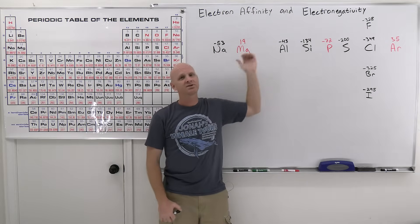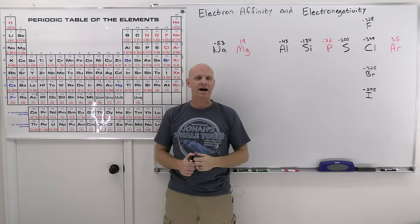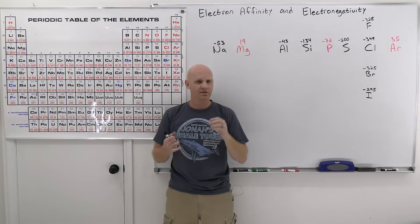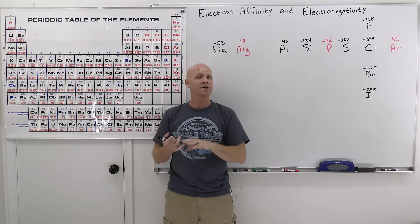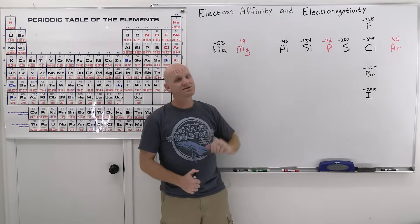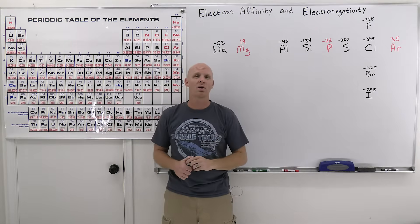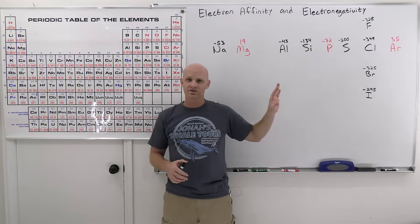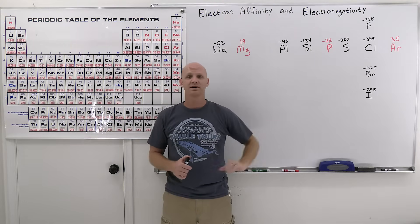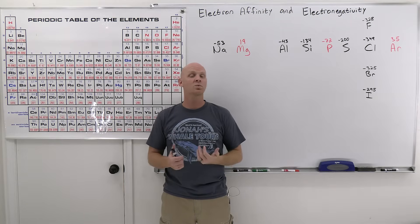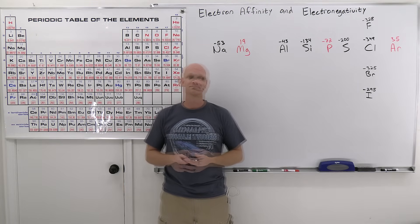Electron affinity and electronegativity are the last of the periodic trends we'll cover here. We've already covered atomic radius and ionization energy in the previous lessons in this chapter, so now we'll cover these two to polish it off. We'll still have a lesson of descriptive chemistry to finish this chapter, but it won't involve any periodic trends.